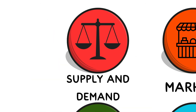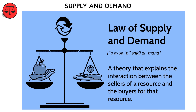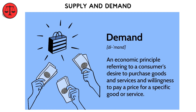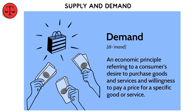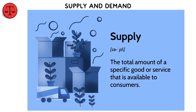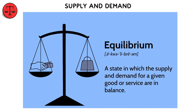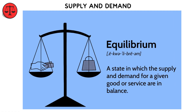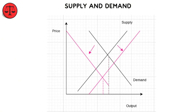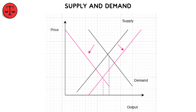Supply and demand form the foundation of all market economies. Demand represents how much of a good or service consumers want at different prices, while supply reflects how much producers are willing to provide. The point where these two forces meet is called market equilibrium, determining the product's price and quantity sold. When demand rises and supply stays constant, prices tend to increase.